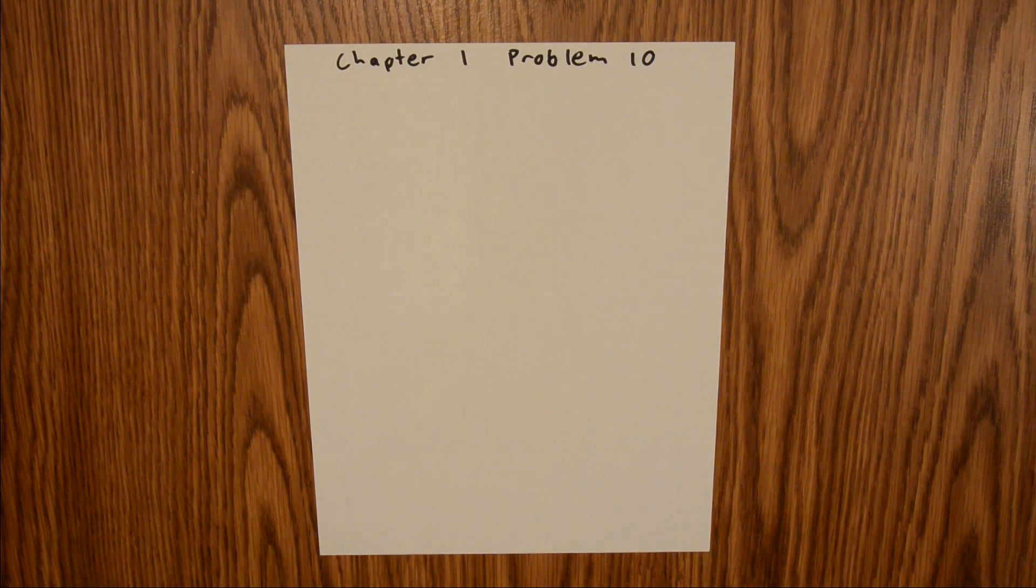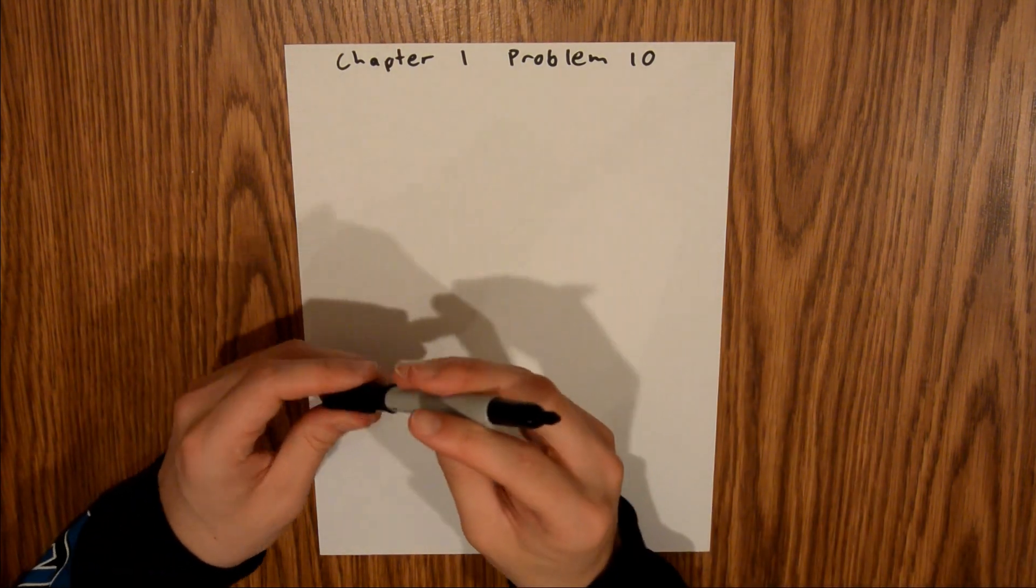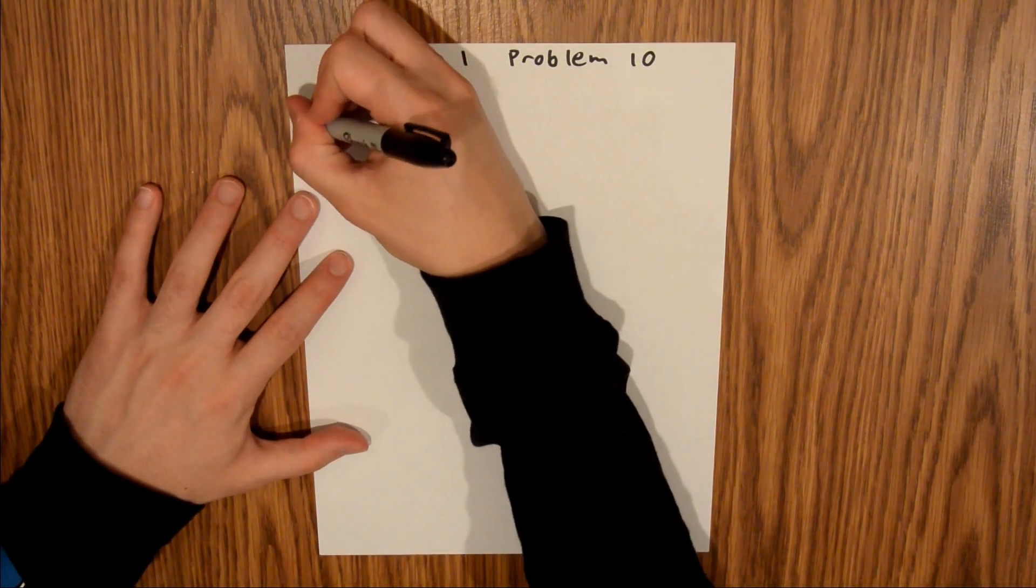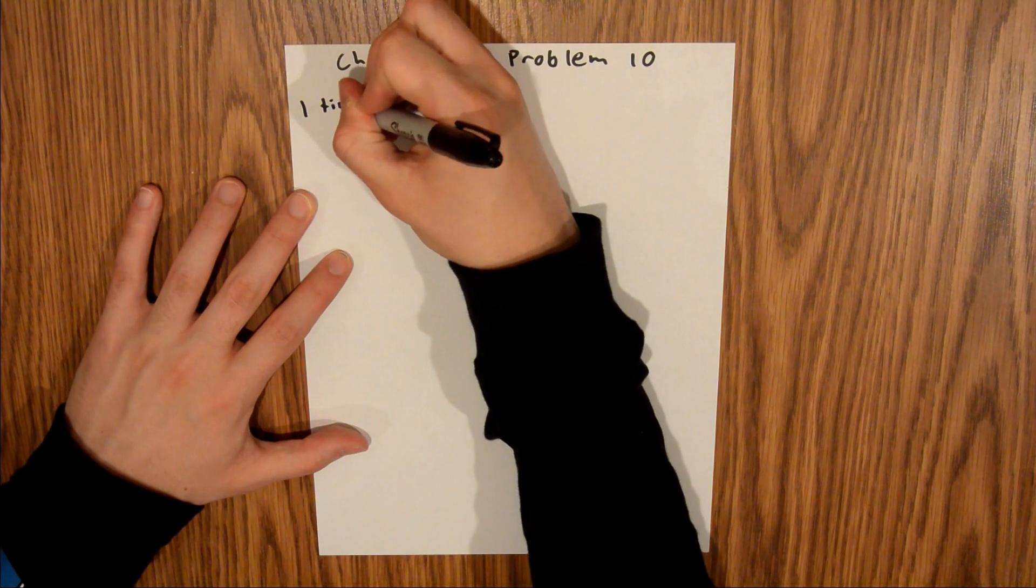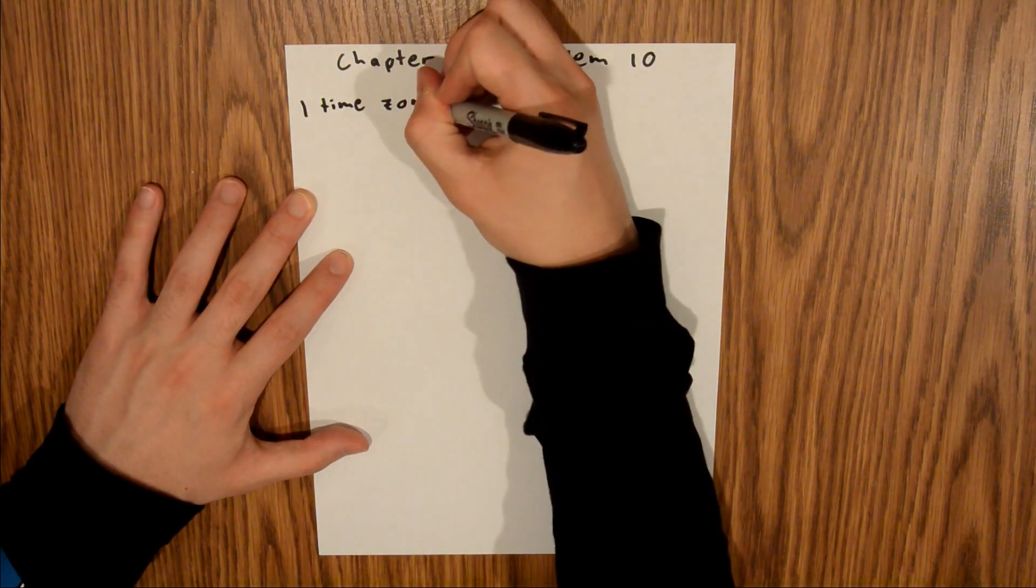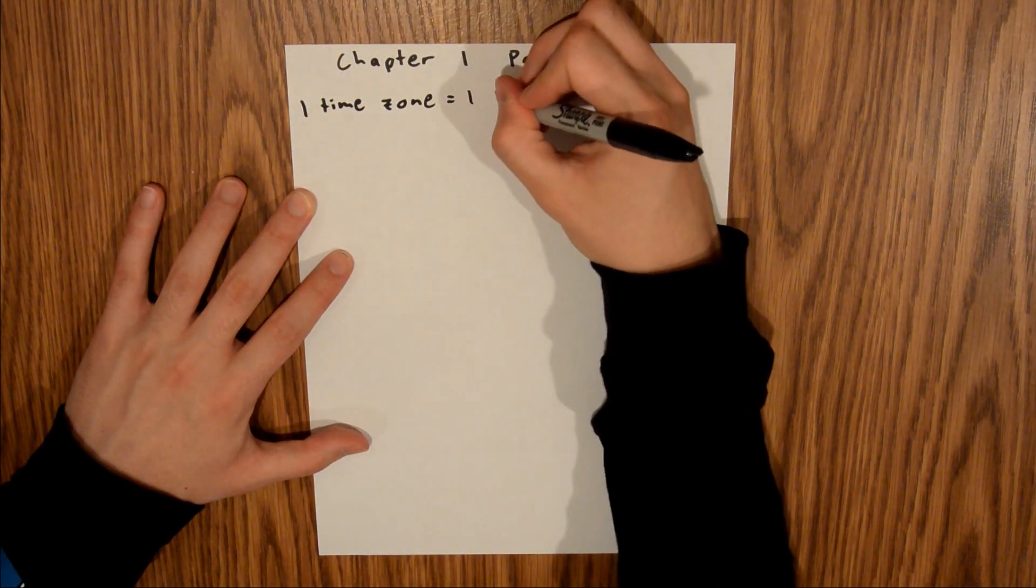Chapter 1 is all about measurement, and in Problem 10, we were asked to find how many degrees of longitude would need to be traveled in order to move across one time zone. And so we know that one time zone is equal to one hour,